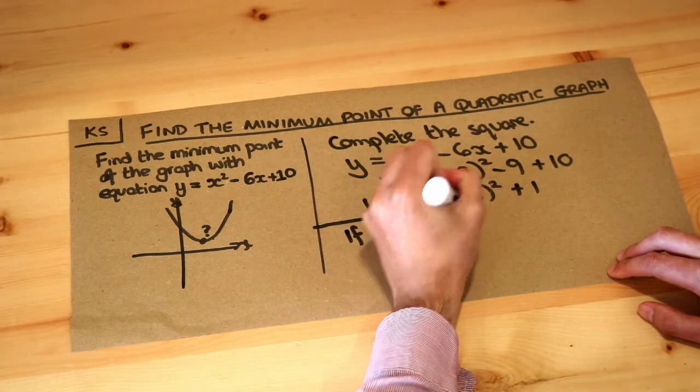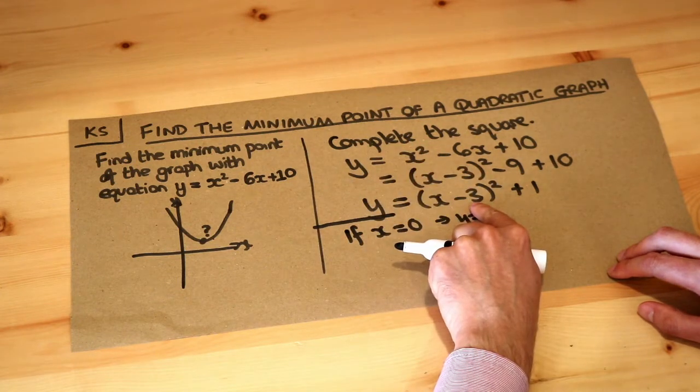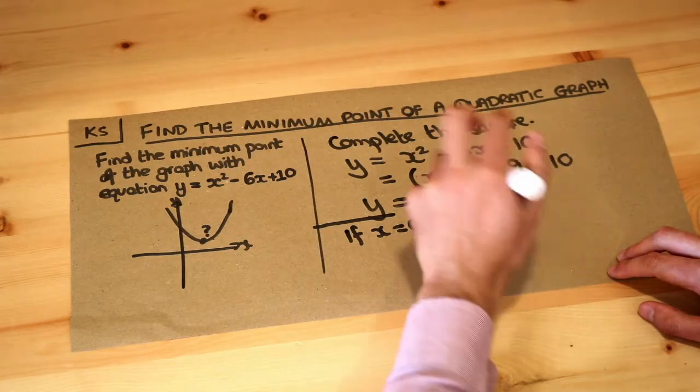If x was 0, then y would be 0 minus 3, which is minus 3 squared, is 9 plus 1 is 10.